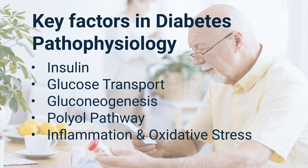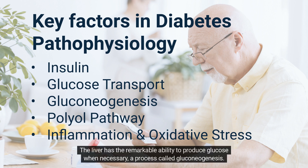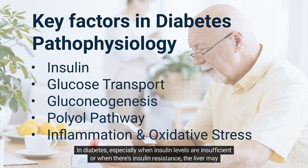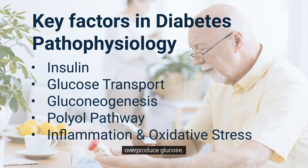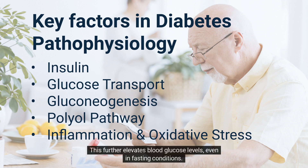Key factor 3 — Gluconeogenesis: The liver has the remarkable ability to produce glucose when necessary, a process called gluconeogenesis. In diabetes, especially when insulin levels are insufficient or when there's insulin resistance, the liver may overproduce glucose. This further elevates blood glucose levels, even in fasting conditions.